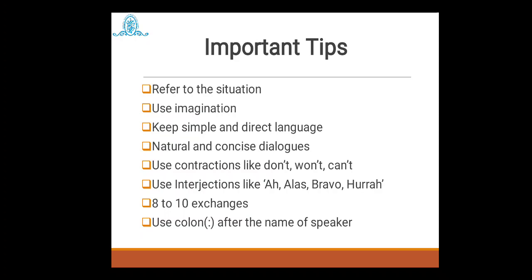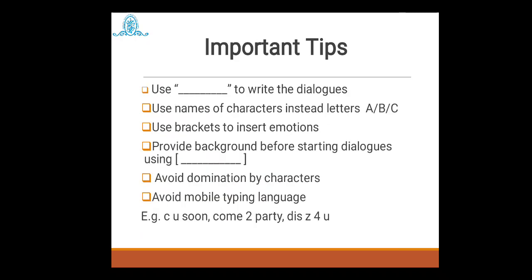You can also use interjections so that you give the impression of a natural exchange of dialogues — interjections bring naturality to your dialogues. Whether informal or formal communication, make use of interjections where possible. Mind that you have to use only 8 to 10 exchanges of dialogues. Also, use punctuation marks as much as possible. When writing any dialogue, use a colon after the name of the speaker, and then use inverted commas to write the dialogue. If any dialogue belongs to a person, you have to use inverted commas — either single or double.